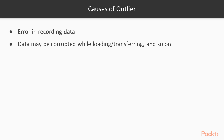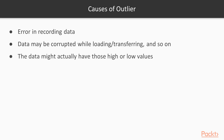One final thing to note is that the data might actually have those high or low values. What this means is that the outlier might not be due to some error in recording or corruption of data — that outlier might be a true value, which I'll show you with an example.